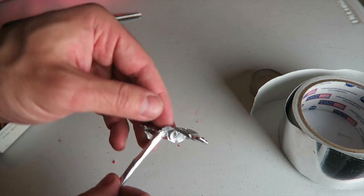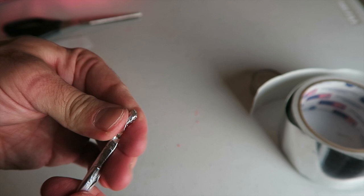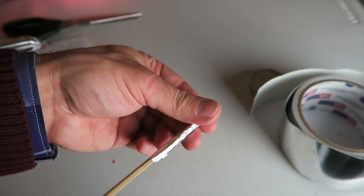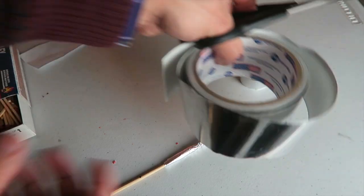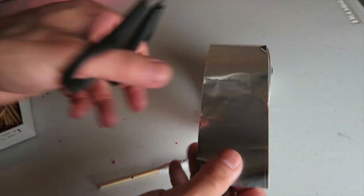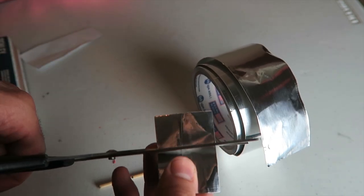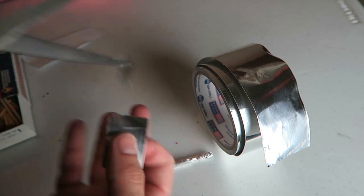For the last part we're going to add a fin. So take your aluminum tape and you want to cut out a square roughly about this size. Fold it in half once to make a triangle.